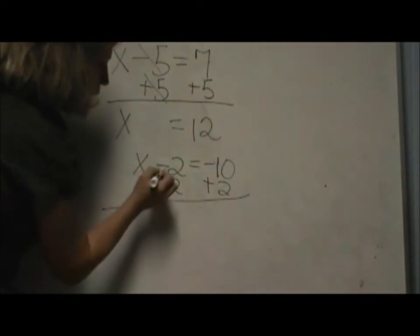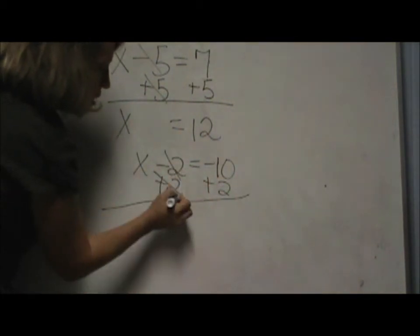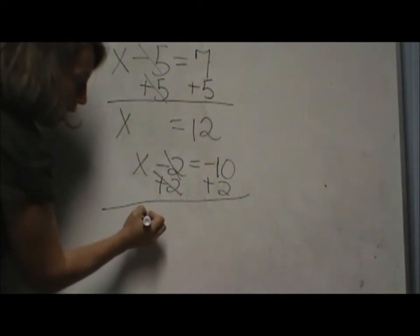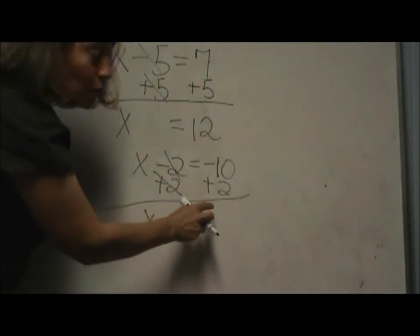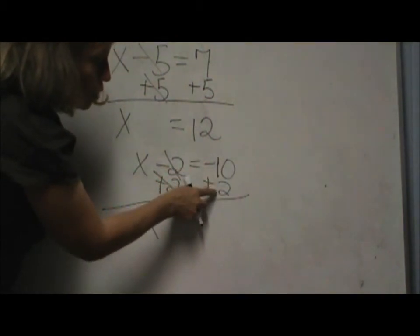Now notice on this one the negative 2 and the positive 2 still cancel to 0. Now I am left with x. But on the right side I have sign numbers. So negative 10 plus 2.